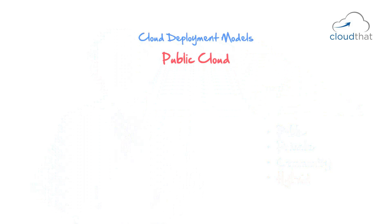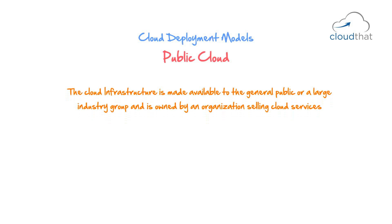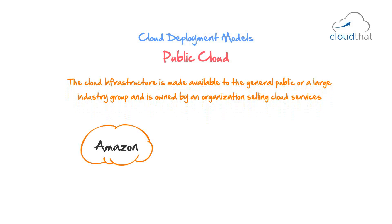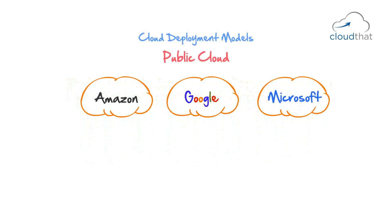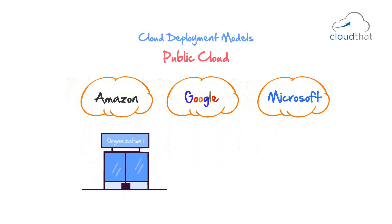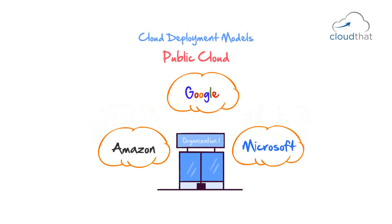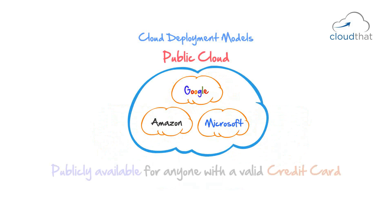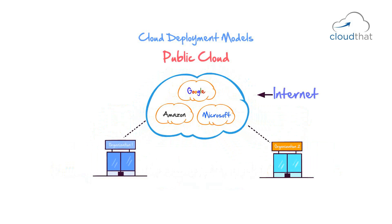Public cloud. This is easy to understand. Public cloud is where a cloud provider like Amazon, Google, or Microsoft provides cloud services to any organization or entity which can pay for these services and use them. The cloud is publicly available for anyone with a valid credit card. So far, whatever we have discussed, we have been talking about public cloud.